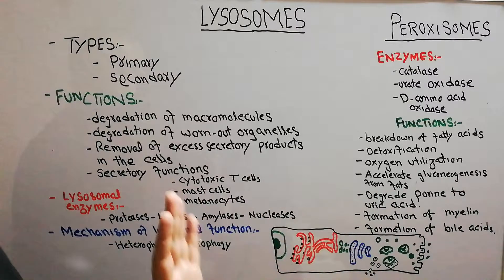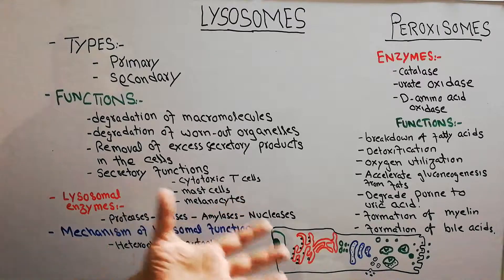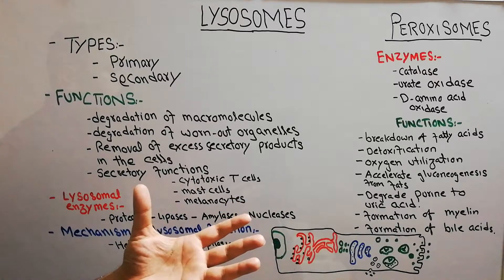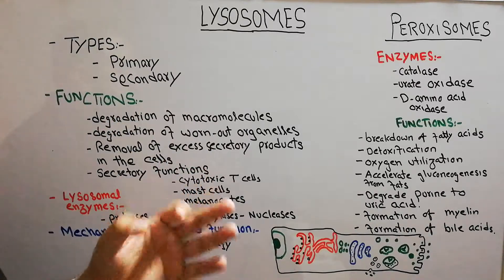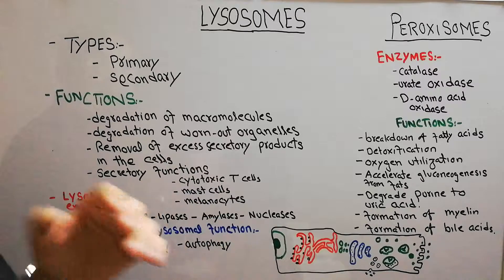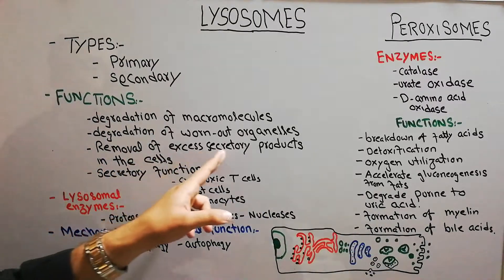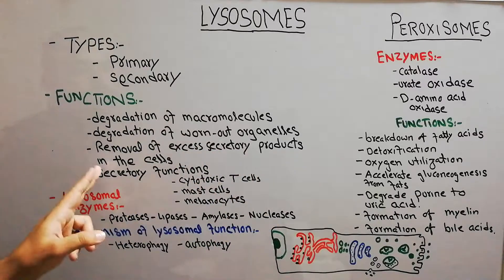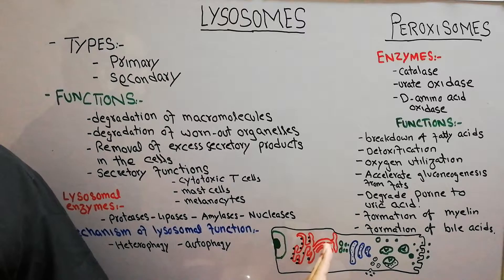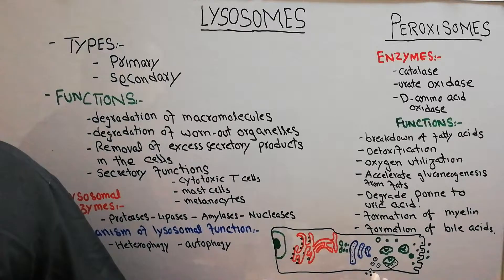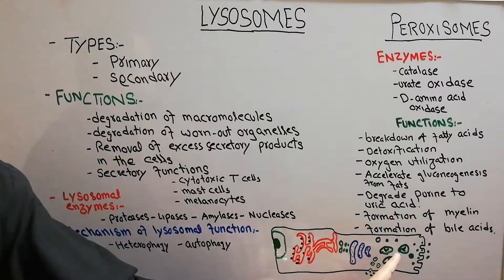Because the cell is a very important structural and functional unit of the human body, anything which decreases its function must be removed — lysosomes are there to remove it. Another function is the removal of excess secretory products: a lot of secretory products formed by the endoplasmic reticulum and Golgi apparatus in the form of enzymes or secretory vesicles, if in excess, are also removed through lysosomes.